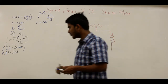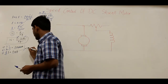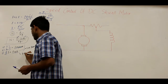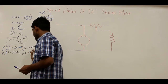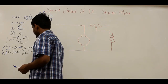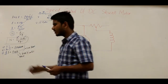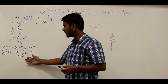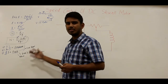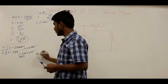Under field control methods we have: the field rheostat method, the field voltage control method, and the reluctance control method — though we won't discuss reluctance control here, as it involves designing mechanical features of the motor to vary reluctance and thereby flux. Let us focus on the field rheostat method and the field voltage control method.